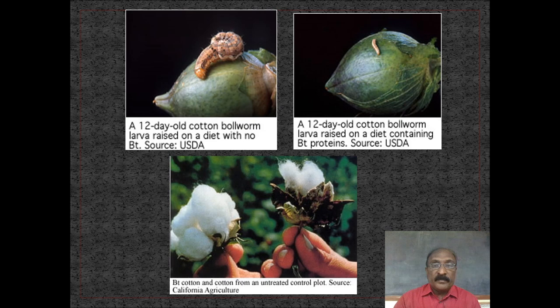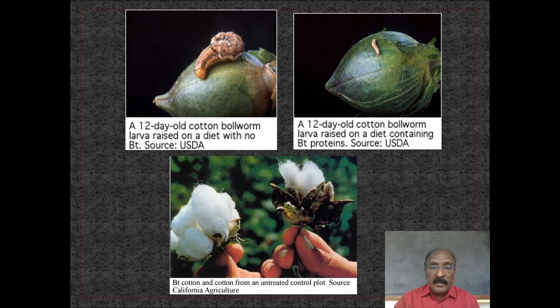A 12-day-old cotton bollworm larvae raised on a diet with no Bt, versus a 12-day-old cotton bollworm larvae raised on a diet containing Bt proteins. You can see that with no Bt, the insects are not affecting the cotton ball, whereas with Bt, the cotton is protected because the insect has been affected by the toxin.